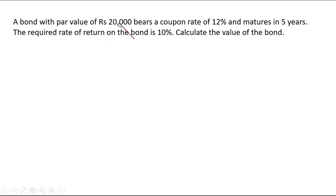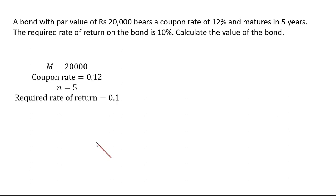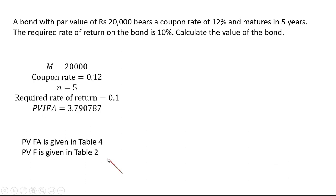A bond with a par value of 20,000 rupees bears a coupon rate of 12% and matures in 5 years. The required rate of return on the bond is 10%. Calculate the value of the bond — meaning if I am not going to buy the bond, I am expecting 10% somewhere else. But the government is giving me 12% as the coupon rate for the investment in the bond of 20,000 rupees, and I am going to get 20,000 rupees back after 5 years. Looking at the tables, intersecting 5 years and 10% required rate of return, we get PVIFA of 3.79 from Table 4 and PVIF of 0.62 from Table 2.